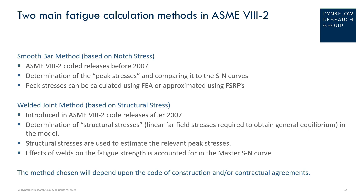The second method is the welded joint method, which is based on the structural stress. It was introduced in the ASME section 8 division 2 code releases after 2007. This involves the determination of the structural stresses, which are the linear far-field stresses required to obtain general equilibrium in the model, and the structural stresses are used to estimate the relevant peak stresses. The effects of the welds on the fatigue strength are accounted for in the master SN curve.